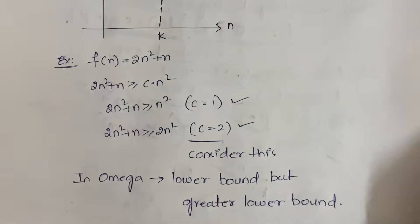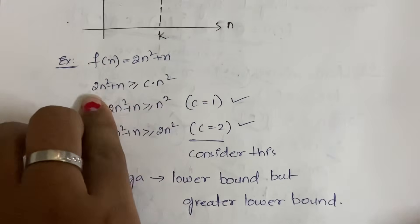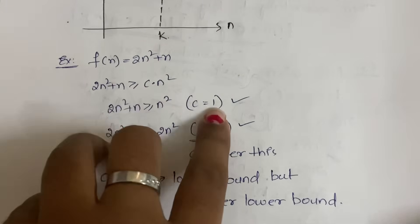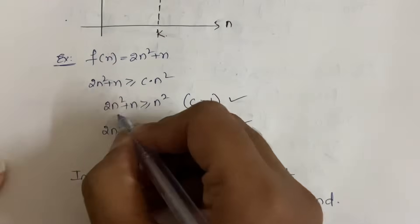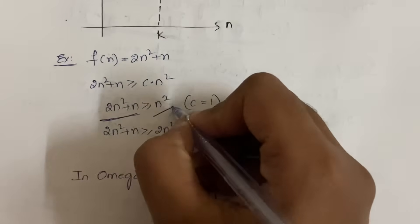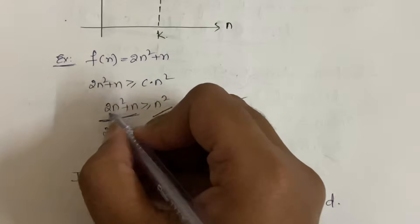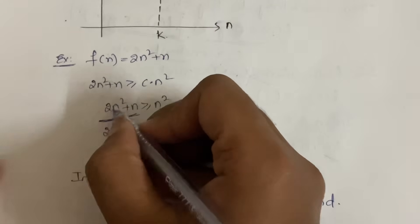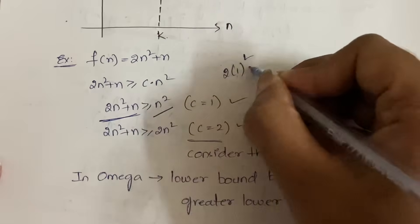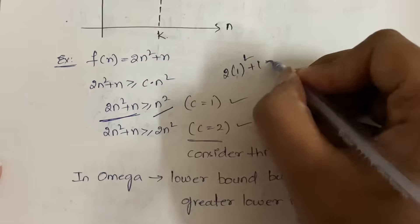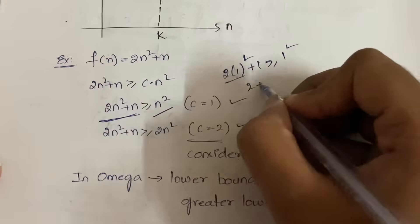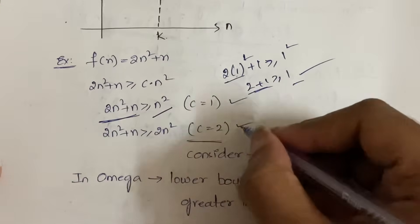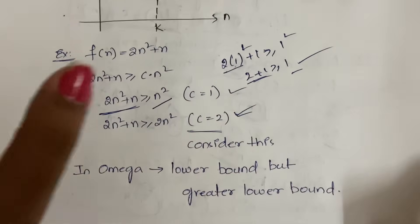2n² + n ≥ c · n². For c = 1: 2n² + n ≥ n² — this is obviously true. For example, n = 1: 2(1)² + 1 = 3 ≥ 1. So c = 1 satisfies. For c = 2: also satisfies. For c = 3: check n = 3: 2(9) + 3 = 21 ≥ 3(9) = 27? No, 21 < 27, so c = 3 does not work.